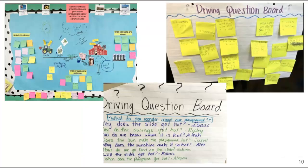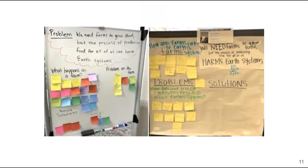Here are examples of driving question boards from other K–5 units. They depict students' questions in categories, some along with a drawn model from the unit. Some driving question boards are simple lists of questions or groups of sticky notes posted on chart paper. Teachers and students can manipulate and move around questions and label categories together.